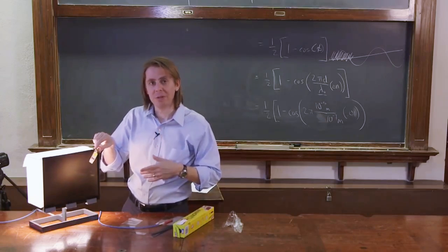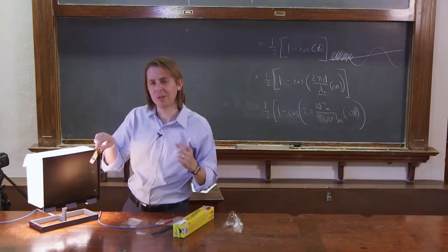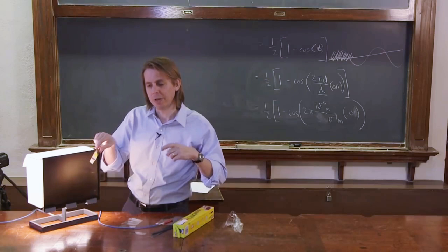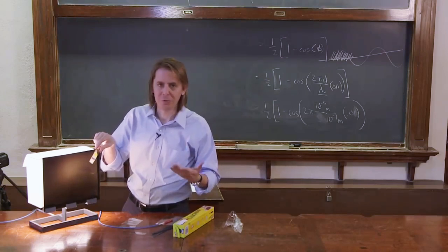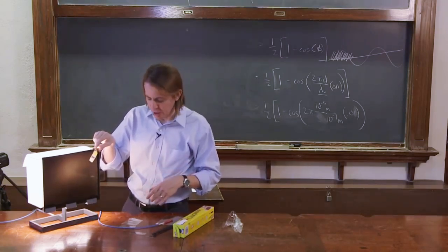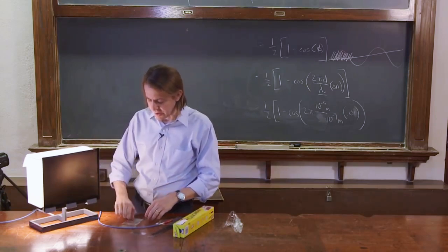The reason is probably I overestimated the anisotropy. When I said the difference between the n vertical and n horizontal is 0.04, it's probably too big. It's probably more like 0.02 or 0.01.